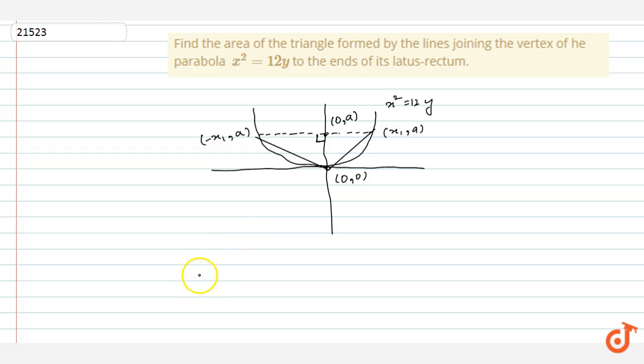To find the area of the triangle we should know all the coordinates. Let us take the coordinate (x₁, a). We know that this point lies on the parabola, so putting the values directly we will have x₁² = 12a.